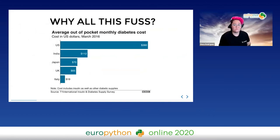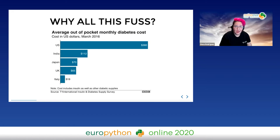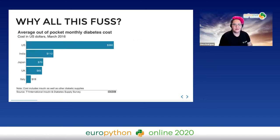One of the biggest challenges is access to insulin and medication. I live in the United States — this picture is from four years ago but it illustrates the point. We spend so much money on essential medication that people die because they ration their insulin. Without insurance, I would probably spend between $1,500 to $2,000 per month just to be alive. I'll leave that to sink in.